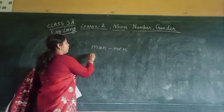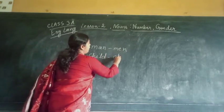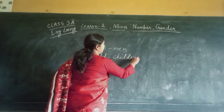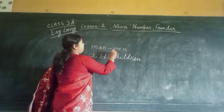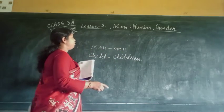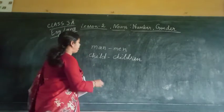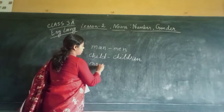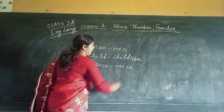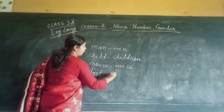Next word — child. If I write 'child', how can we change it? 'Child' will be changed into 'children'. Here 'man' is changing into 'men'. For 'child', we are making it 'children'. And 'mouse' will be changed into 'mice'. 'Foot' will be changed into 'feet'.